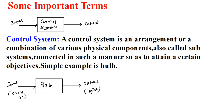The basic definition of a control system is: a control system is an arrangement or a combination of various physical components, also called subsystems, connected in such a manner so as to attain a certain objective. In other words, a control system is the combination of different connected parts that together form the control system.